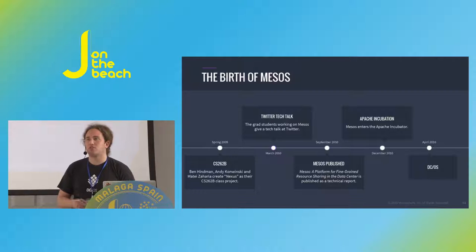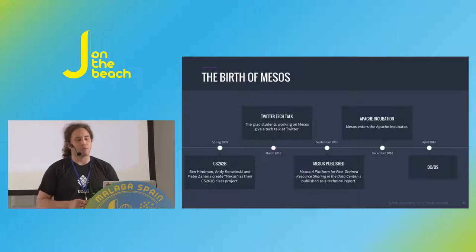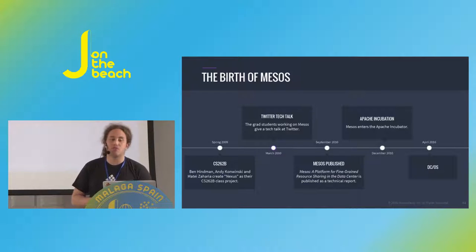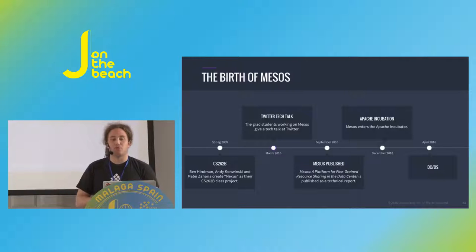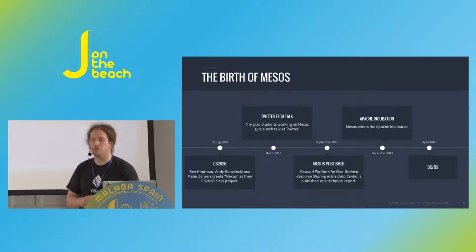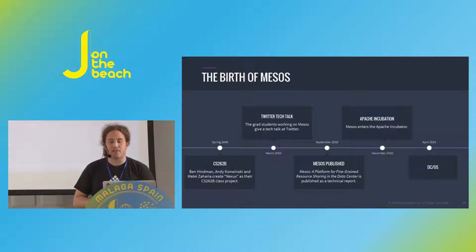Twitter also had the problem that as soon as one part of the cluster failed, it had rippling effects throughout the entire infrastructure, which often resulted in the fail whale — basically Twitter being unavailable. When they heard about this project they were really interested and invested heavily, which led shortly after to the open source project Apache Mesos, submitted to the Apache Foundation as an incubator project in December 2010, graduating pretty quickly after that.